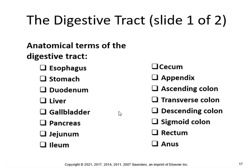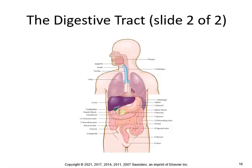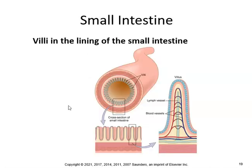What's the name of the pigment produced by the breakdown of hemoglobin during red cell destruction? Now here's the anatomy of the digestive tract, including the villi in the lining of the small intestine — and what is the function of these villi?